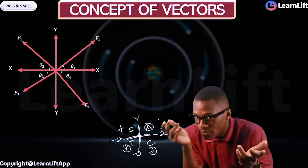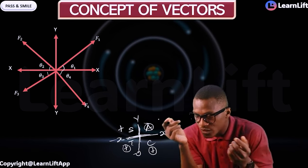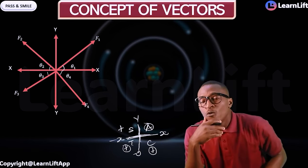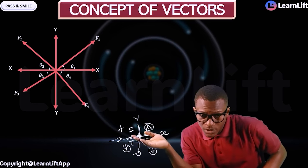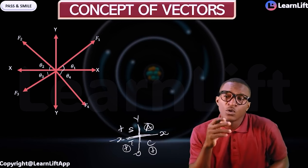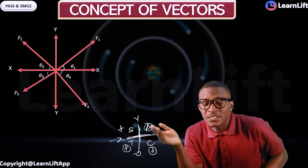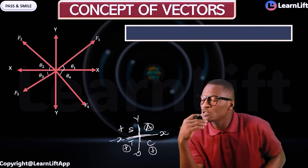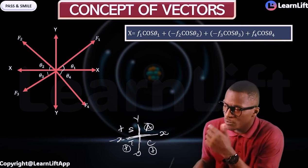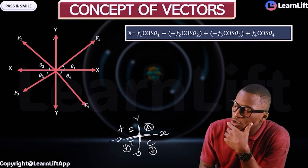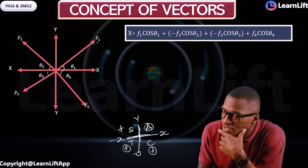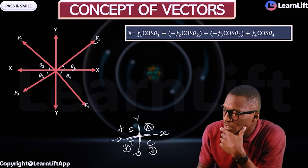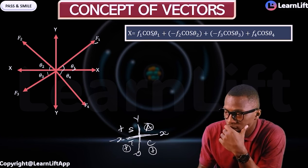Now, how do we resolve this? First we find the horizontal component, then the vertical component. For the horizontal, it is F1 cos θ1. In the first quadrant, all are positive, so everything there is positive.